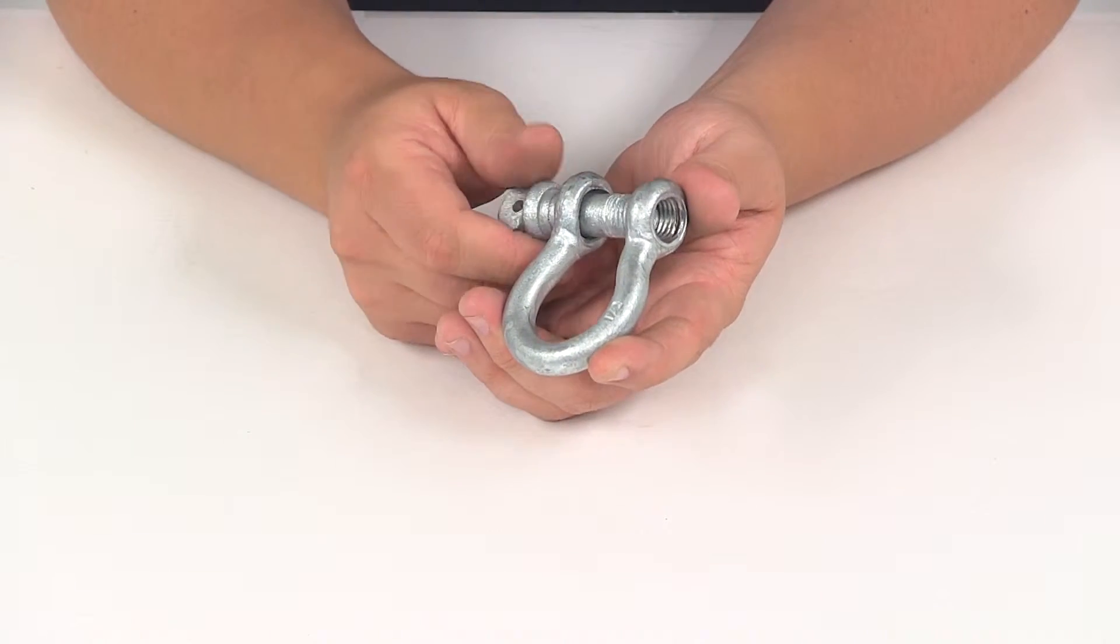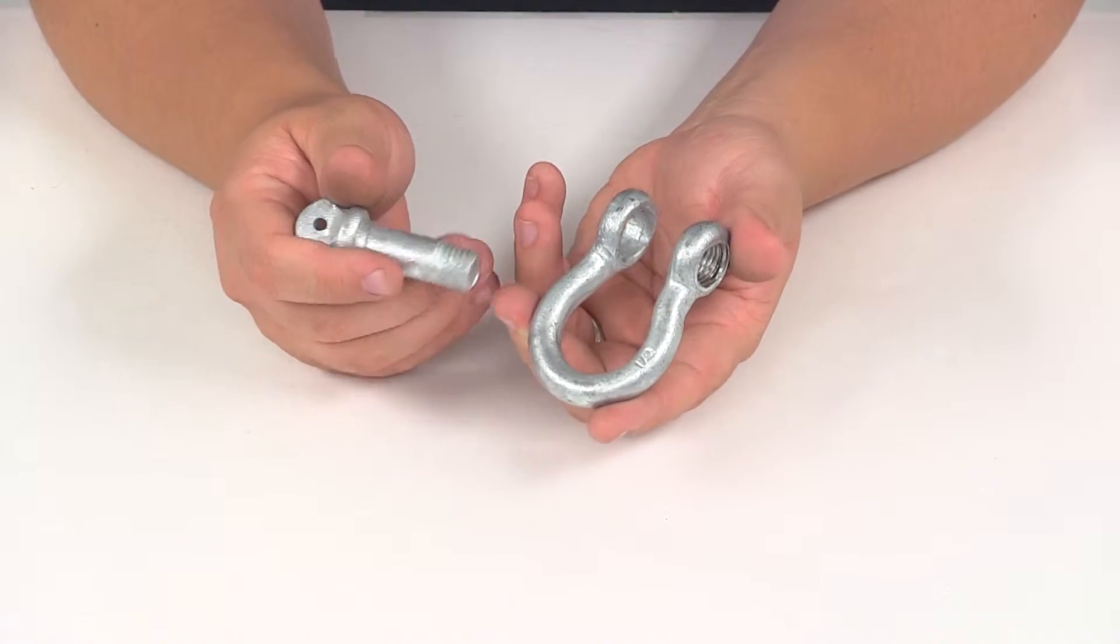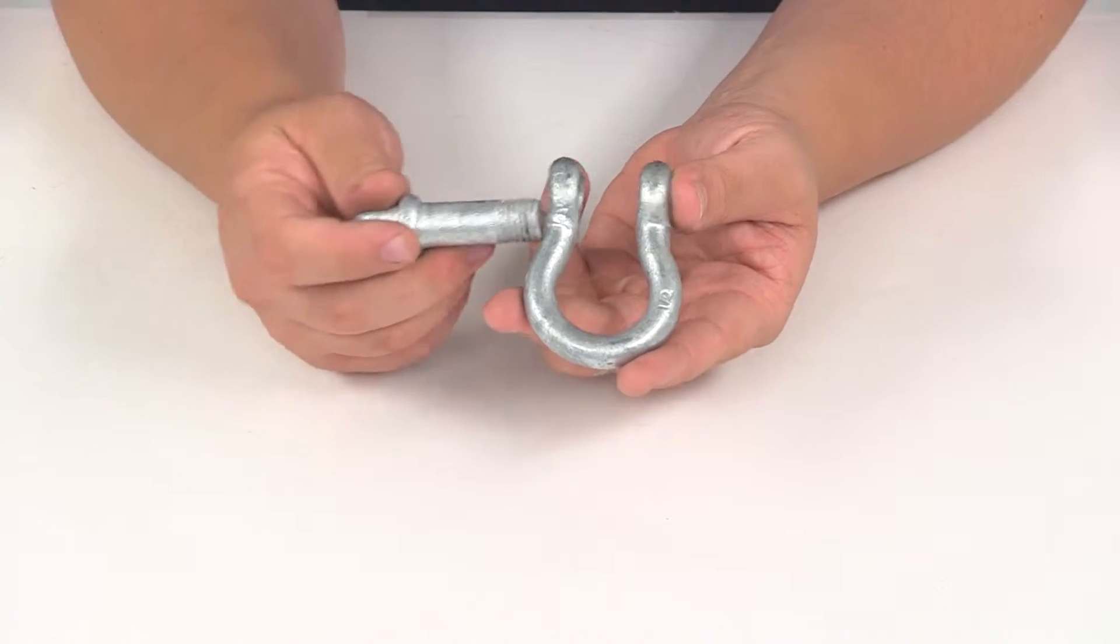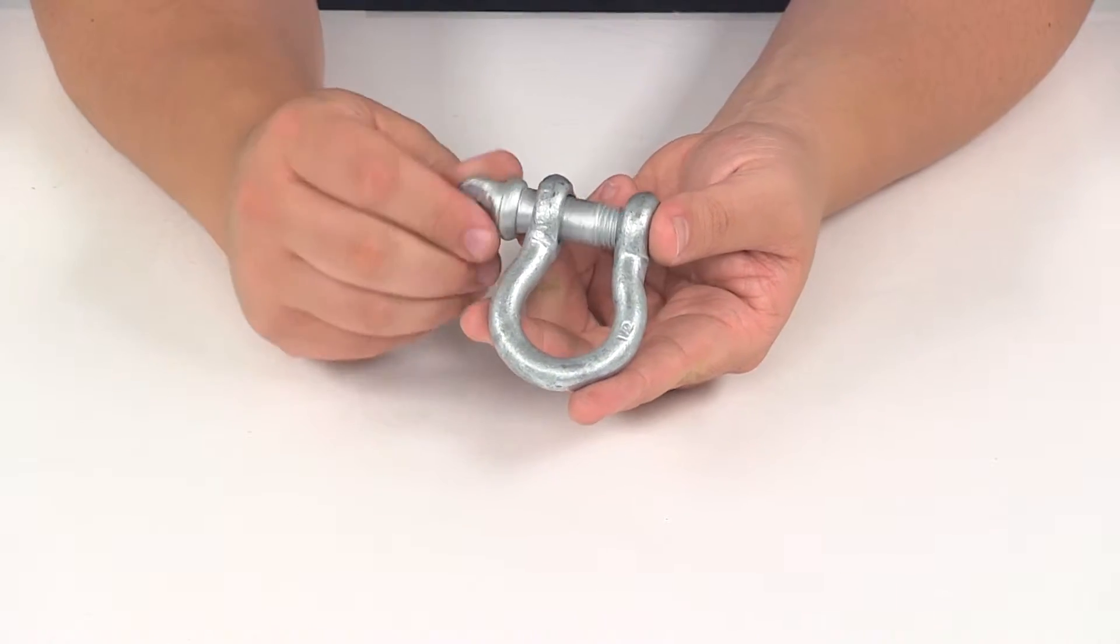They're also great to use as tie-down anchors for different types of straps, whether it's a bungee strap or ratchet strap, but it's also great for connecting your recovery strap, your toe strap, or your tree saver strap.